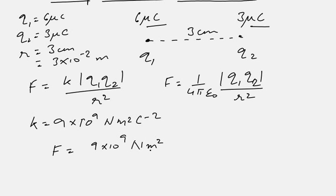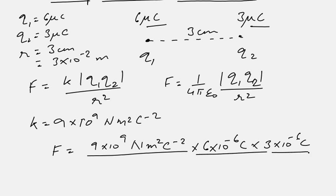So 9 × 10⁹ Newton meter squared coulomb⁻², then we have q1, which is 6 × 10⁻⁶ coulombs, times the second charge q2, which is 3 × 10⁻⁶ coulombs. In the denominator we have r squared: r is 3 × 10⁻² meters, and square of the whole quantity.